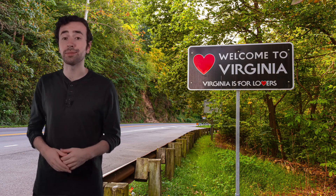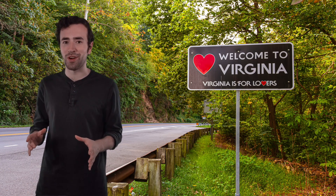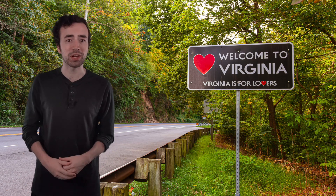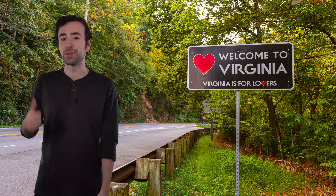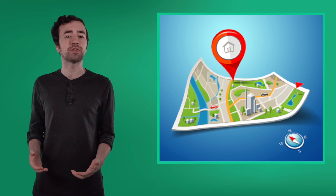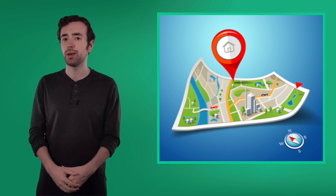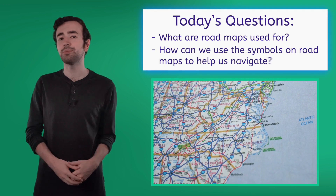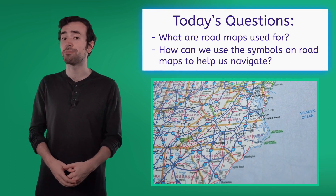Hey everyone! It's Justin again, and I am so glad you're back for the next part of our road trip. I know you just learned all about the southern region of the United States in Operation Exploration, and that's where I am right now. I arrived here from the Northeast region a little while ago. As we explored the Northeast, we learned about absolute and relative location. We used maps to help us find and describe locations on our road trip. It was when I was continuing the road trip south that I realized I wasn't just using any old map — I was using a road map. Today we'll answer two questions: What are road maps used for, and how can we use the symbols on road maps to help us navigate? Let's get into it!